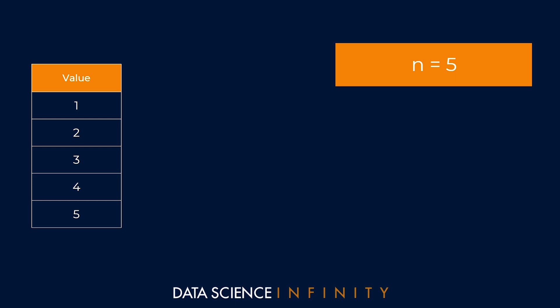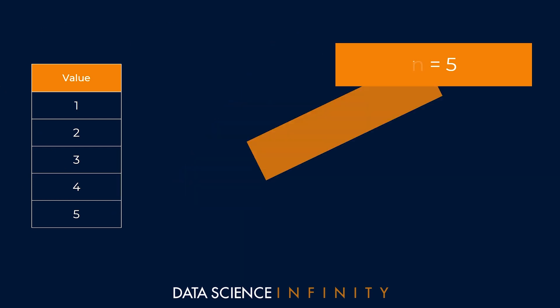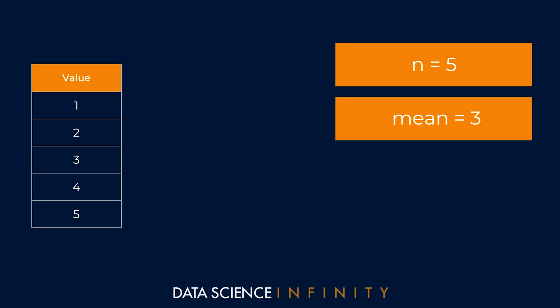The next thing that we need for our formula is to calculate the mean of our values. So if we add them up, so one plus two plus three plus four plus five, we get 15. And if we divide this by n equals five, we get a mean of three. And now we have n and we have our sample mean, we can start running through the steps of the formula.